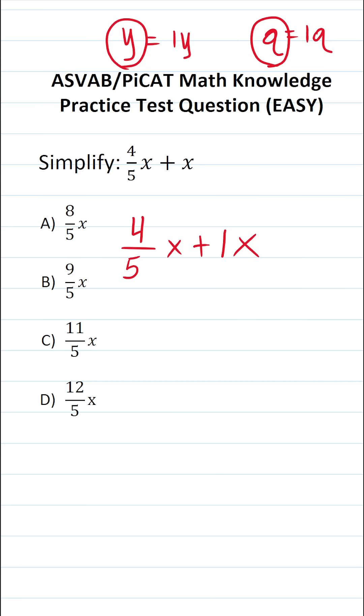That said, it's very helpful to include this one here because we're adding four-fifths x to one x, which means we're adding fractions. So let's take these letter variables and set them aside for a minute and make this a fractions problem. We have four-fifths plus one.